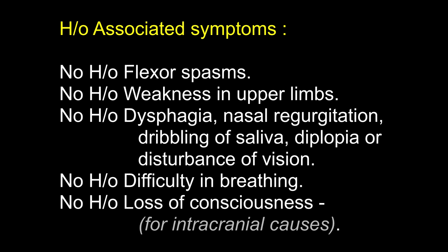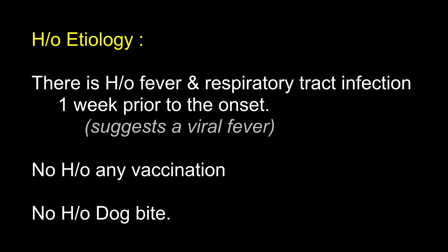What are the intracranial causes of paraplegia? Thrombosis of an unpaired anterior cerebral artery, tumor of falx cerebrae, anterior sagittal vein thrombosis, and median pontine lesions. Regarding history of etiology, there is history of fever and respiratory tract infection one week prior to onset of paraplegia. No history of any vaccination, no history of dog bite. What is the importance of history of vaccination? For post-vaccination myelitis and Guillain-Barré syndrome, which may occasionally follow the anti-rabies vaccine, especially the sheep brain vaccine. It may also rarely occur after mumps, measles, and diphtheria vaccines.